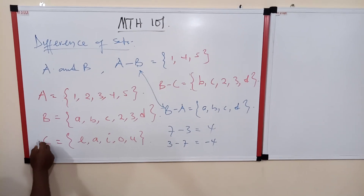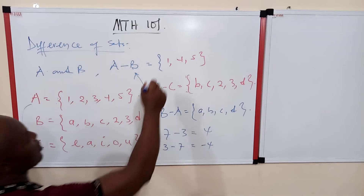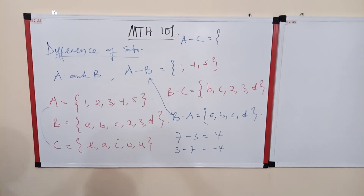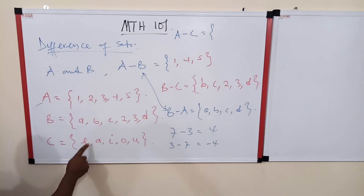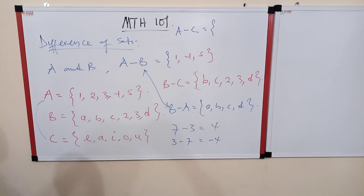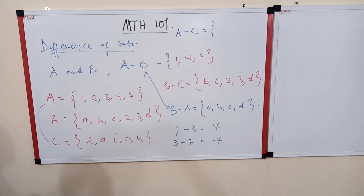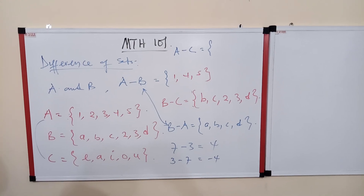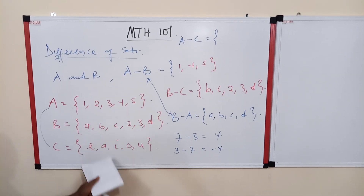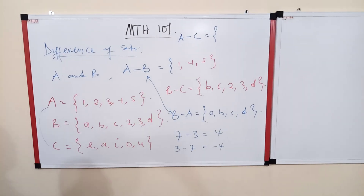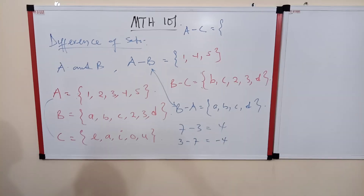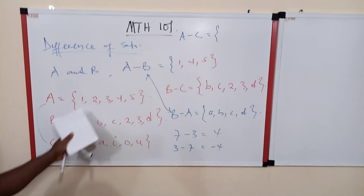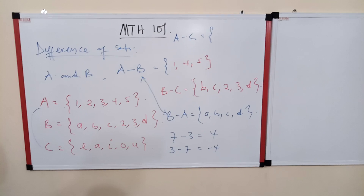Let's do the difference between A and C. A minus C is a new set containing all elements in A but not in C. Since all the elements of A are not present in C — they are disjoint sets — the difference A minus C is simply A itself, the full set {1, 2, 3, 4, 5}.